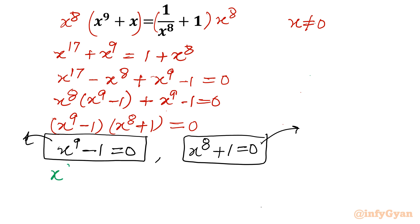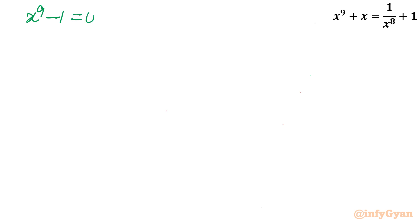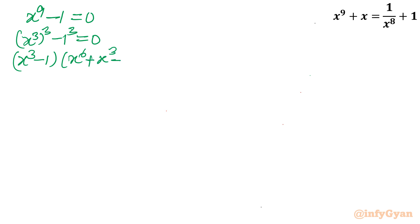Starting with the first equation: x^9 - 1 = 0. This is (x^3)^3 - 1^3 = 0. Applying the a^3 - b^3 identity: (x^3 - 1)(x^6 + x^3 + 1) = 0. So either x^3 - 1 = 0, or x^6 + x^3 + 1 = 0.